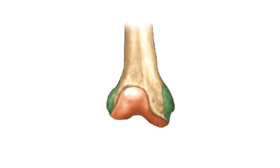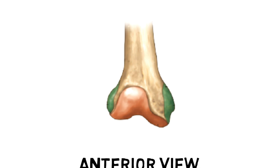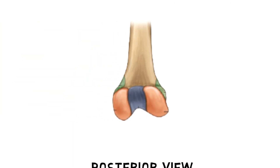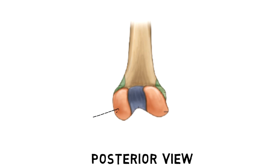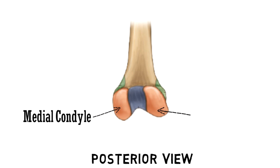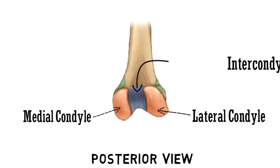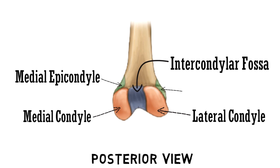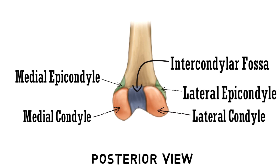Let's have a look at these parts. This is the anterior view of the distal end, and this white surface is the patellar surface. This is the posterior view of the distal end. This red shaded part is the medial condyle, and lateral to it is the lateral condyle. This blue shaded part is the intercondylar fossa. Above the medial condyle is the medial epicondyle, and above the lateral condyle is the lateral epicondyle. This completes all the parts of the distal end.